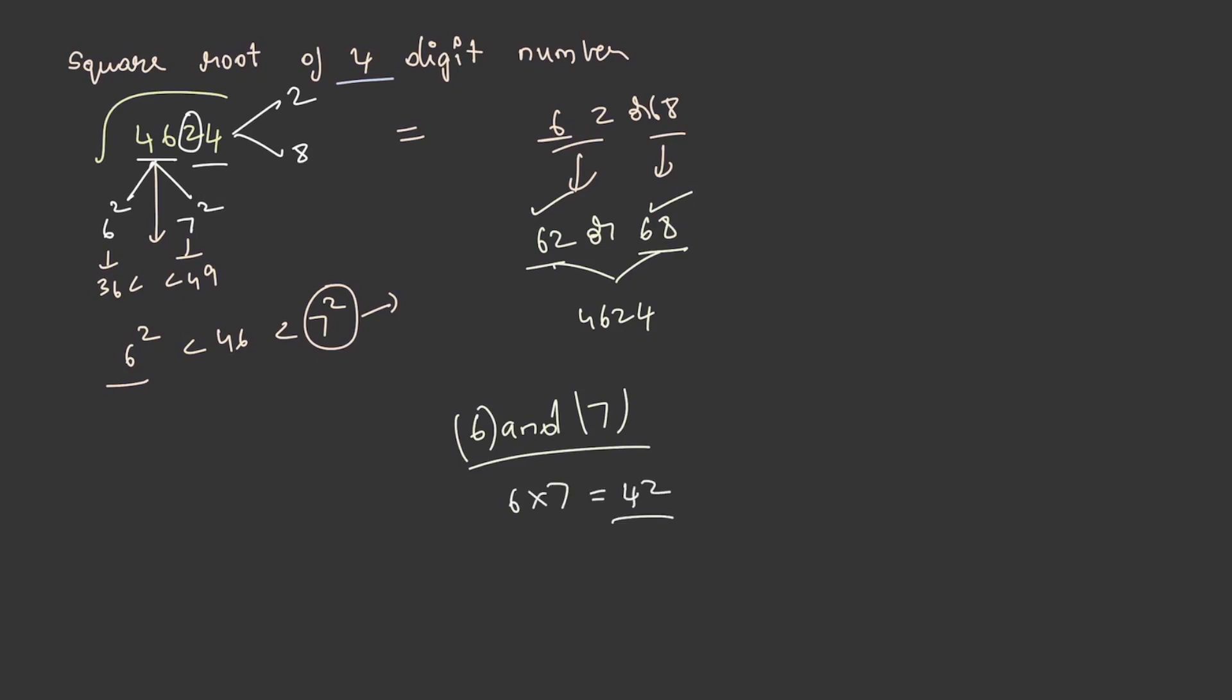Now, let us see whether this value is greater than 46 or less than 46. As we can observe, 42 is less than 46. If the product of numbers is less than the given number, then we have to take the bigger number among the two options. Our two options are 62 and 68 respectively. As 42 is less than 46, we have to take the bigger number among the two, which is 68.